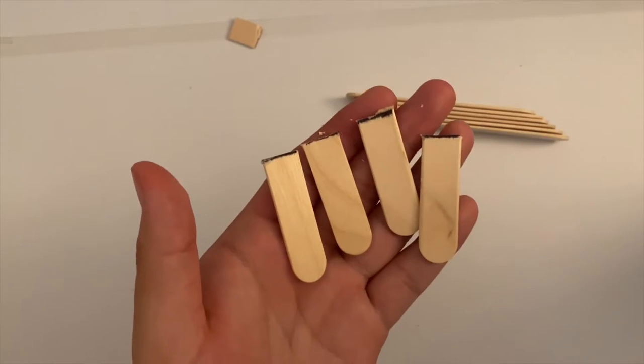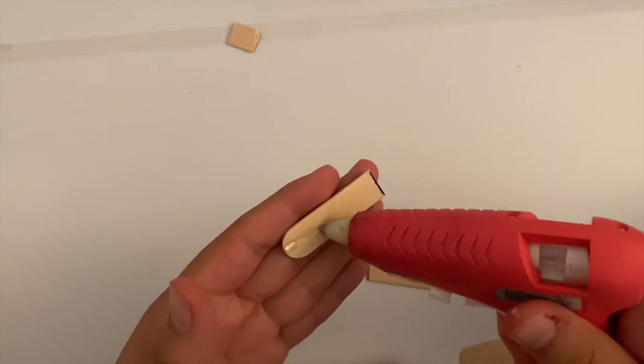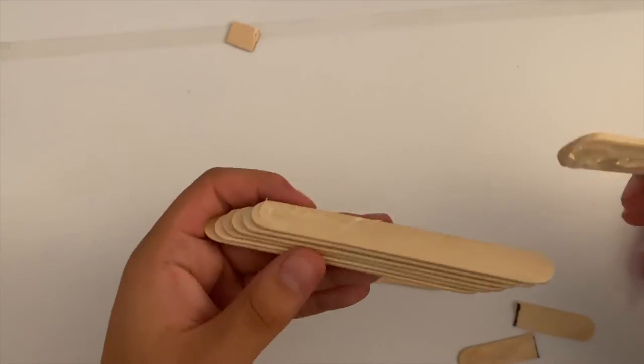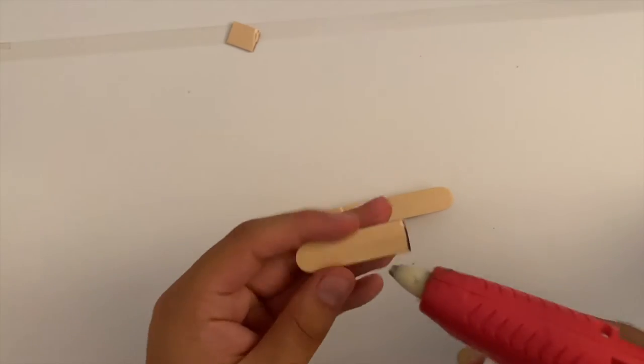This is what the pieces should look like. Now use those pieces and start to glue them onto the sticks. Make sure to leave a gap in between in the middle. This gap will be used for the wings in the next step.